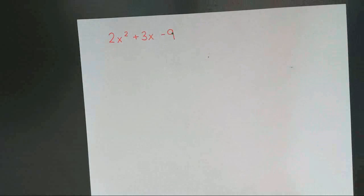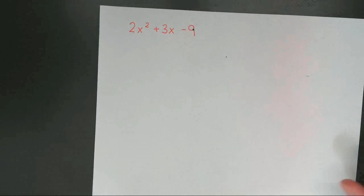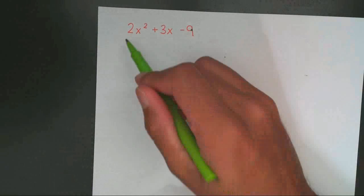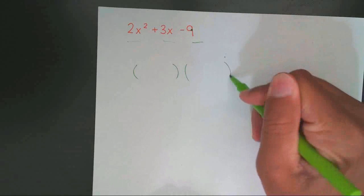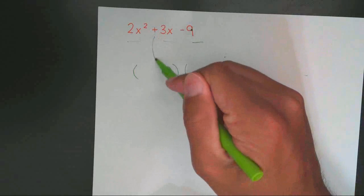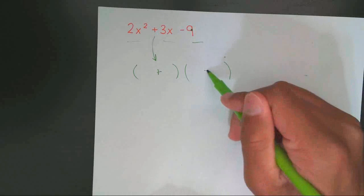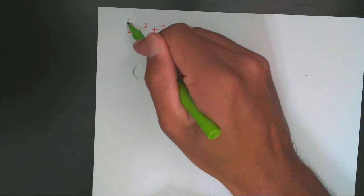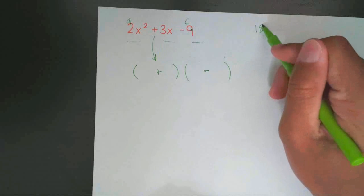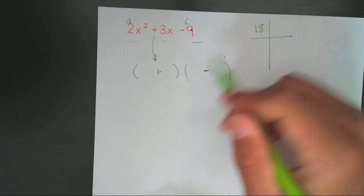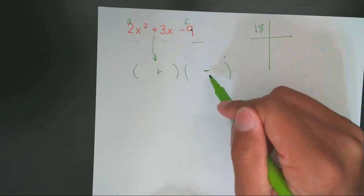2x squared plus 3x minus 9. Same thing. 1, 2, 3. Three terms, so two different parentheses. Figure out your signs. Bring the first sign down. Positive. Multiply your signs. Negative. Multiply a times your c. Don't worry about the signs. 18. And because your signs are opposite, they have to subtract to give you 3.